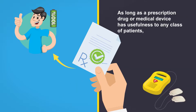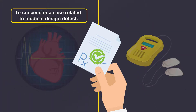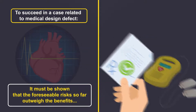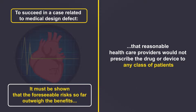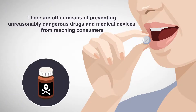The standard is that as long as a prescription drug or medical device has usefulness to any class of patients, it is not considered to have a design defect, even if it is harmful to other patients. To succeed in a case for design defect, it must be shown that the foreseeable risks so far outweigh the benefits that reasonable healthcare providers would not prescribe the drug or device to any class of patients. While this high standard does limit liability for design defect, there are other means of preventing unreasonably dangerous drugs and medical devices from reaching consumers.